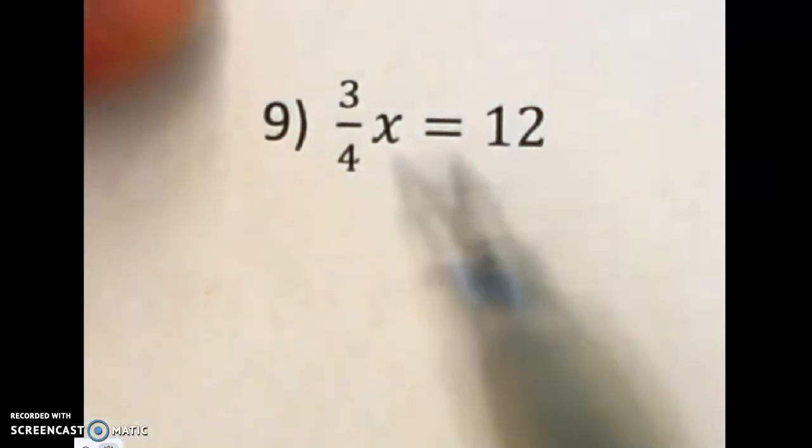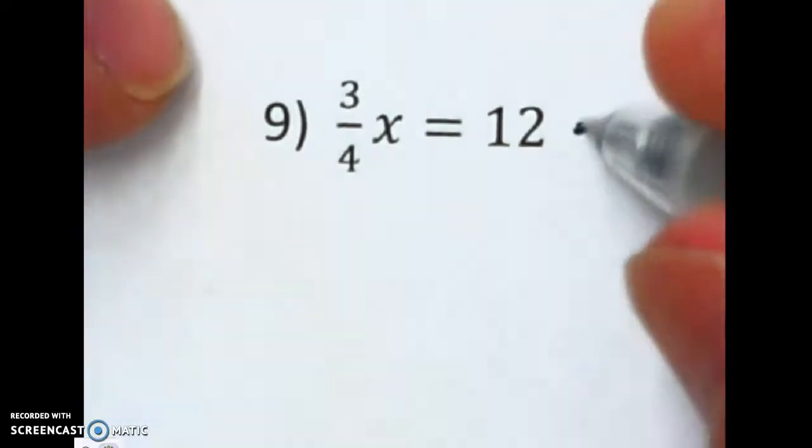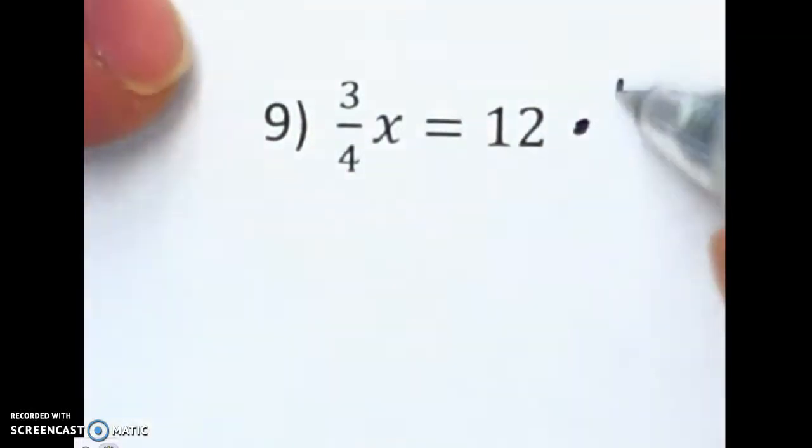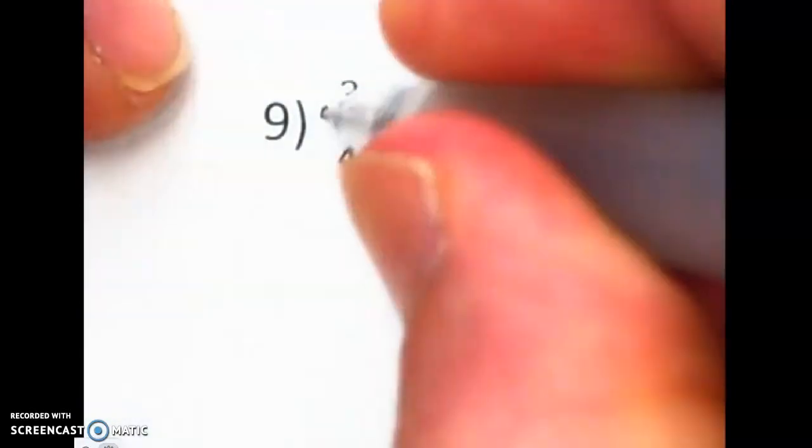The reciprocal is just simply the fraction flipped. So I'm going to times both sides by the opposite, 4 over 3 instead of 3 over 4. And then I'm going to times this side by 4 over 3.